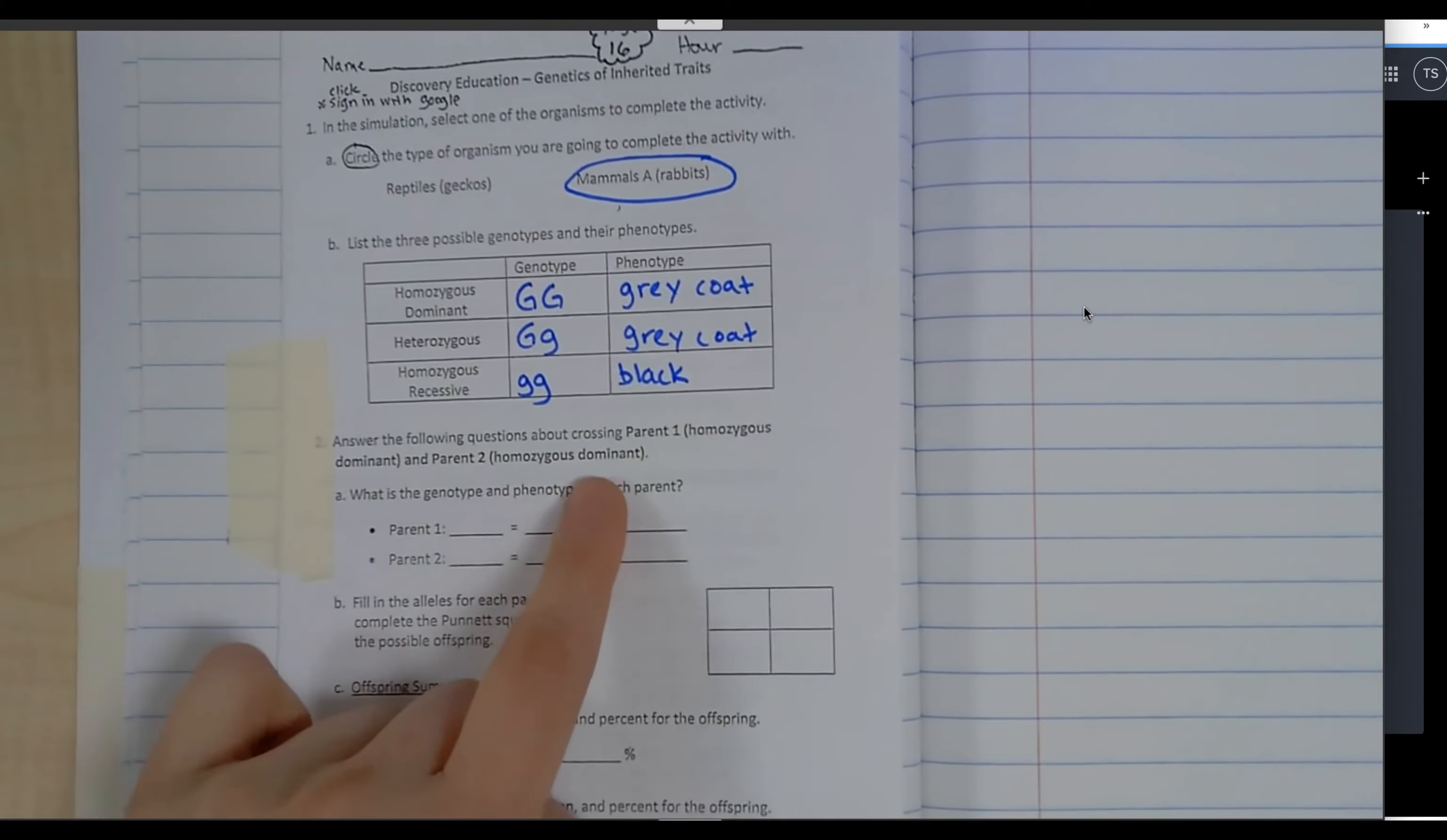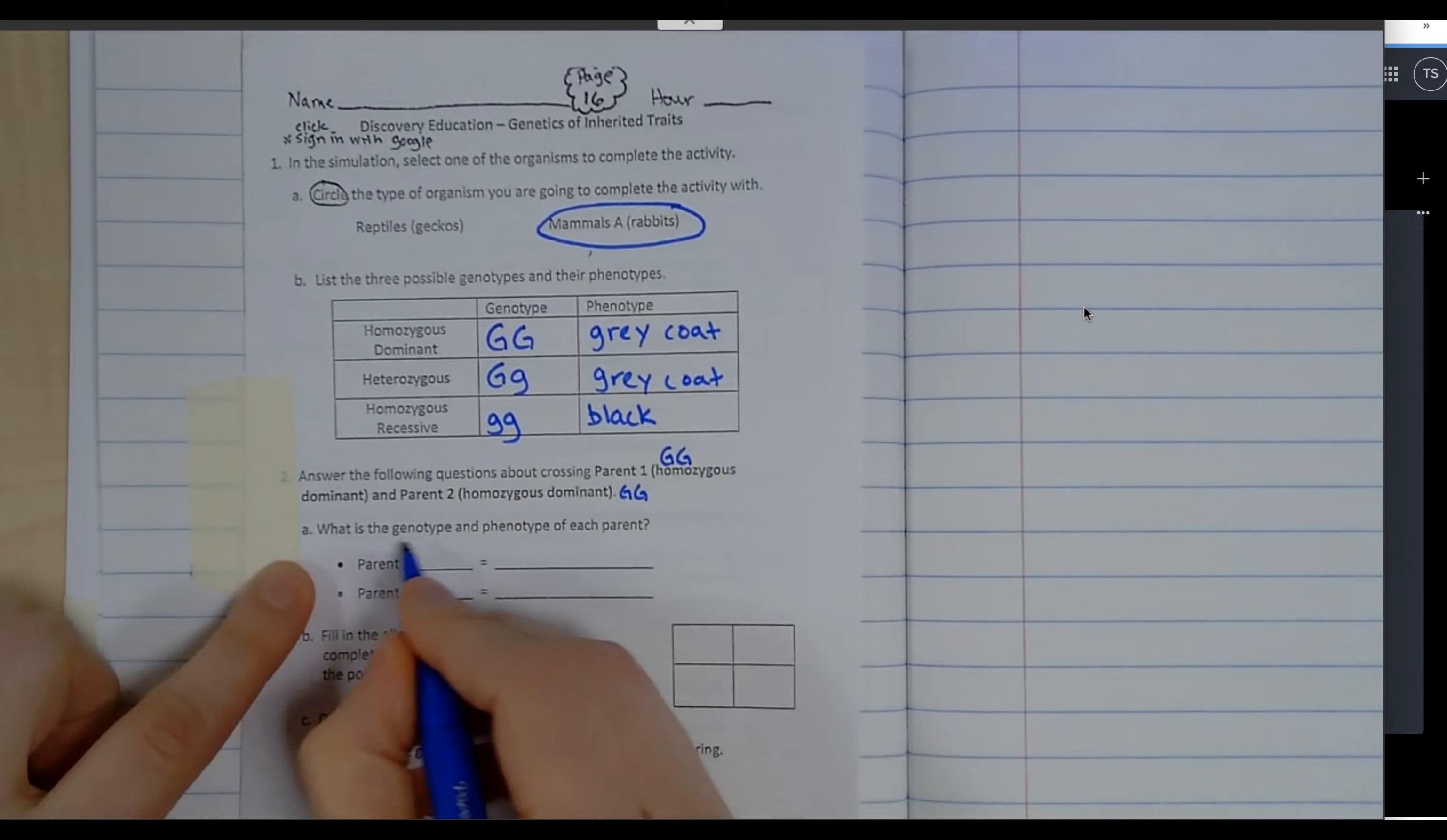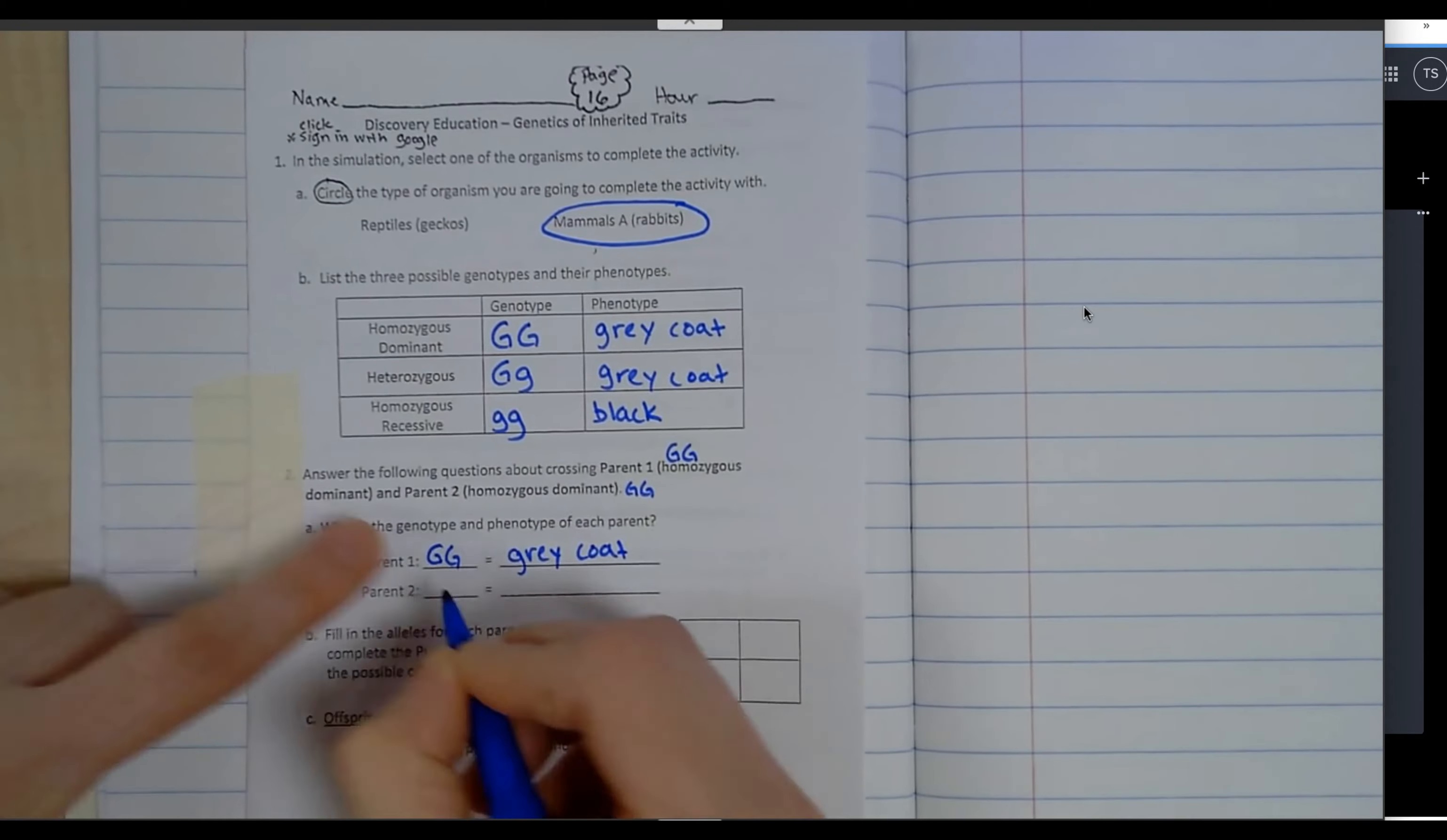It says answer the following questions about crossing parent one homozygous dominant and parent two homozygous dominant. These are using the letter G, so big G big G because homozygous means the same. Parent one is big G big G, which is a gray coat. Parent two is also big G big G and that is a gray coat.